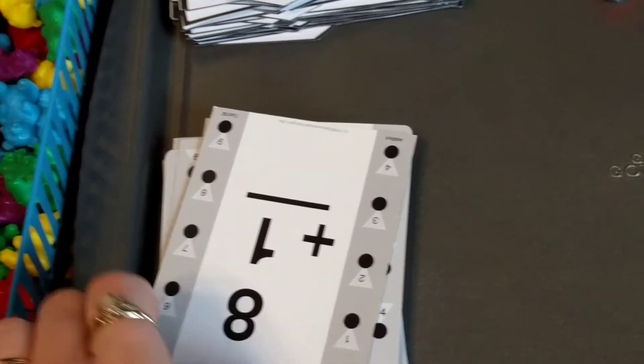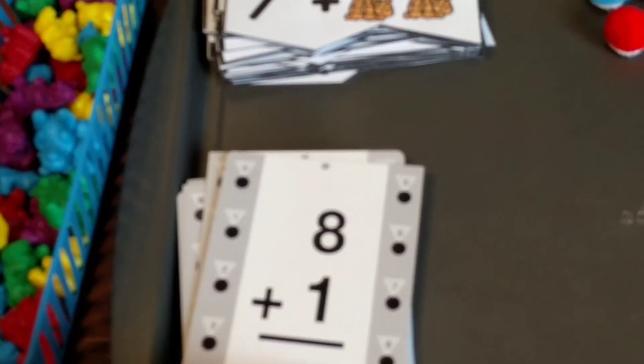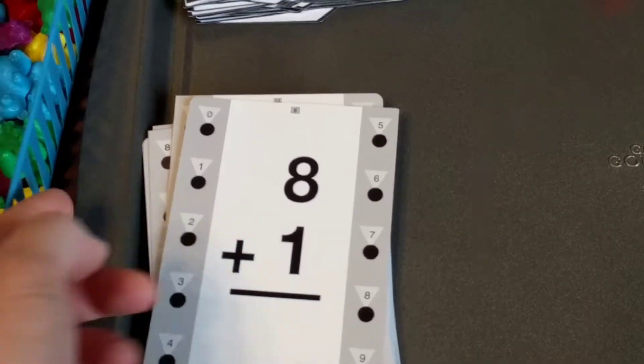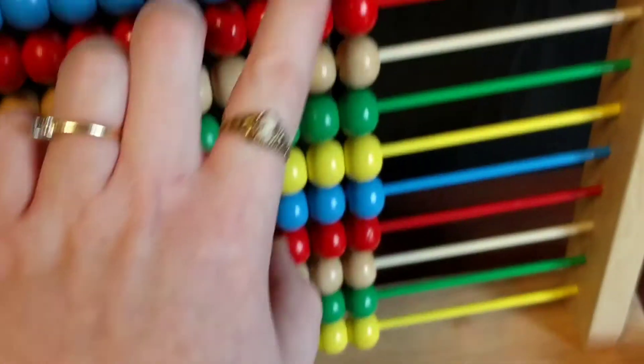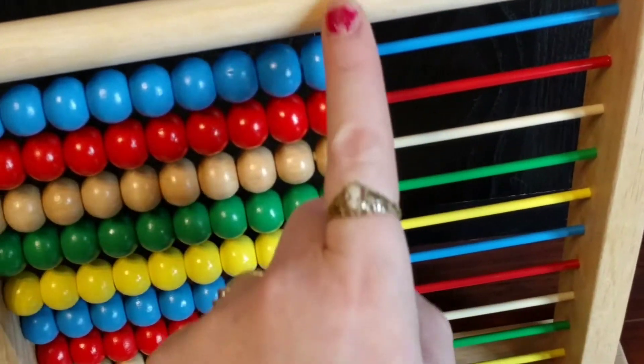Okay, so then we would just keep going. So 8, we're going to count 1 more. That one's easy. So we already have 8, so tell the kids say 8, 9.